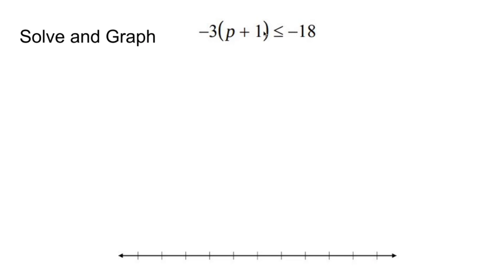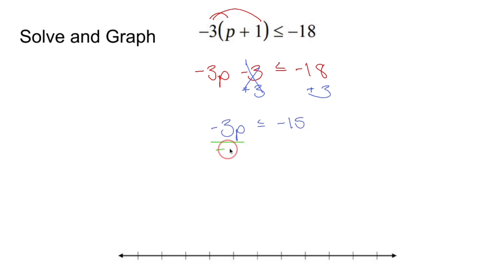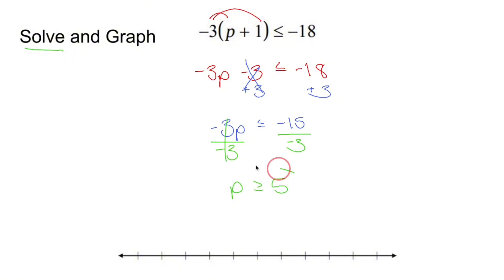By now you should know the rules: if we multiply or divide an inequality by a negative, flip the sign; or if your variable's on the right side, flip everything. I have a distributive property problem. Negative 3 times p is negative 3p; negative 3 times 1 is minus 3, less than or equal to negative 18. I have to get p all by itself. Since I'm subtracting 3, I add 3 to both sides first. Drop down negative 3p is less than or equal to negative 15. Now I divide both sides by negative 3 — when you divide by a negative, flip the sign. Less than or equal to becomes greater than or equal to. Negative 15 divided by negative 3 is positive 5.